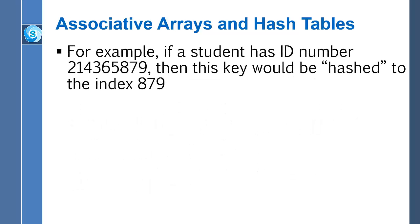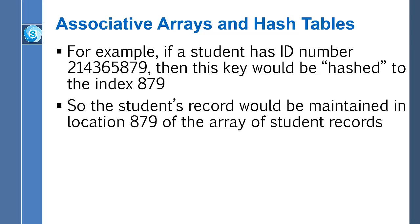Here's an example of how this hashing would happen. Take a student whose ID number is 214365879 — that key would then be hashed to the index 879, the last three digits of the student ID. We could then use index 879 to index into our array, and that would be the slot where we'd expect to find that particular student's record.